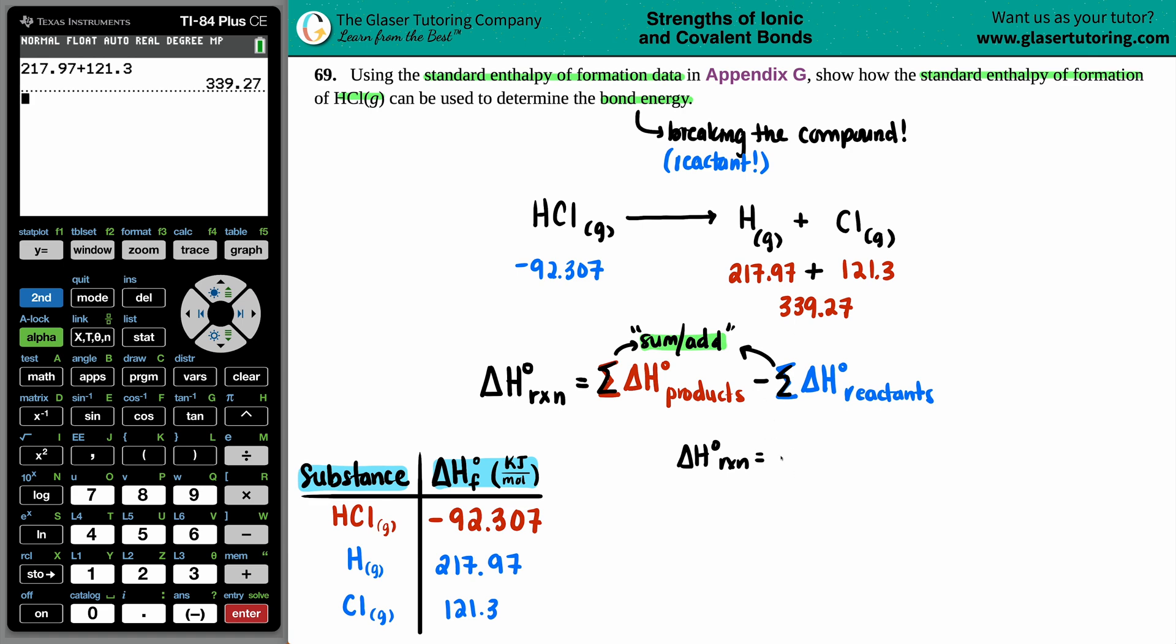So we're going to do 339.27, the sum of the products, minus the sum of the reactants, so negative 92.307. And delta H for the reaction would be this number, bringing it down, minus a negative 92.307. Minus a negative is really a positive, but the calc will do that for me. And I get, I guess we should do sig figs, since we're adding. Technically here we only had to the tenths place, so we should round to the tenths place. So 431.6, that's good enough for me.